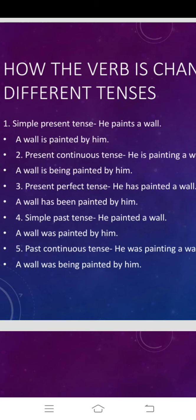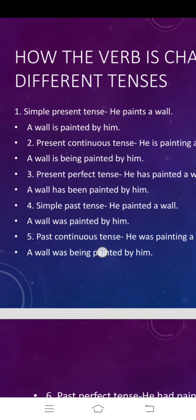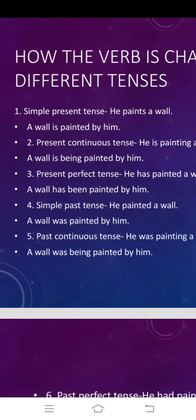He paints a wall. You have to look at the tense — 'paints' is the verb and the tense used is simple present tense. You have to bring the object 'a wall' in front and check whether the object is singular or plural. Wall is singular, so the helping verb 'is' is used, and 'paint' is changed into past participle 'painted'. Pronoun 'he' becomes 'him'. So the answer is: a wall is painted by him.